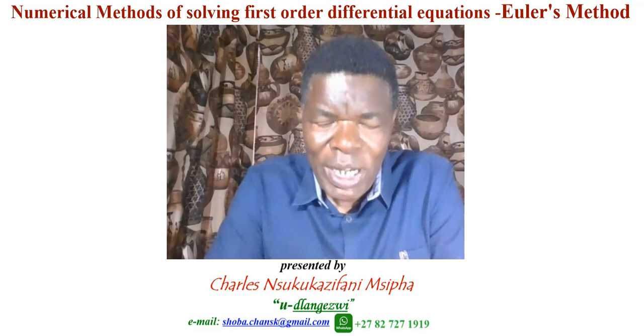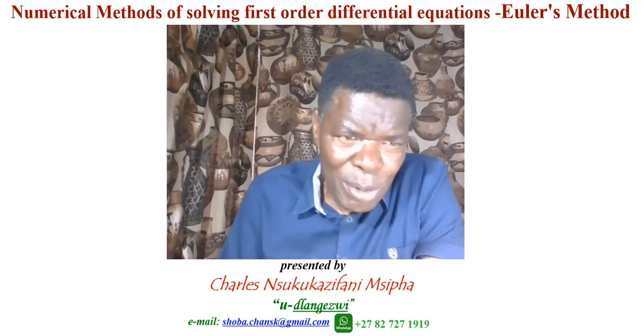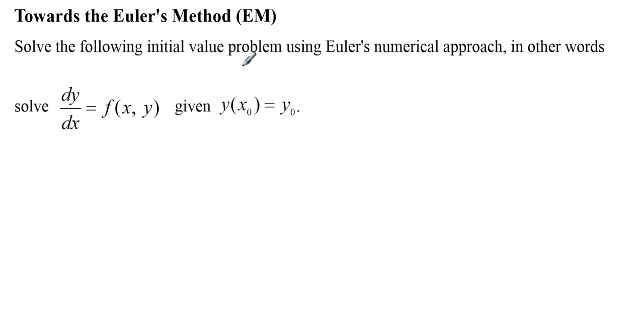In this case, we are supposed to be in the presence of an initial value problem of this nature. Solve the following initial value problem using Euler's numerical approach. In other words, solve dy/dx = f(x,y), given that y(x0) = y0. Now, you must understand what is meant here.